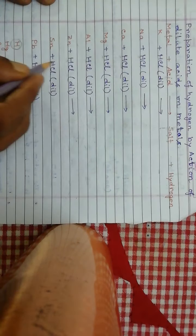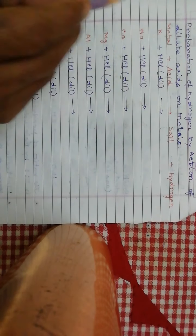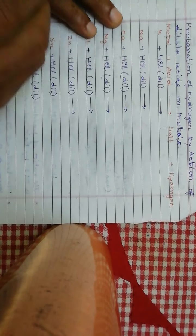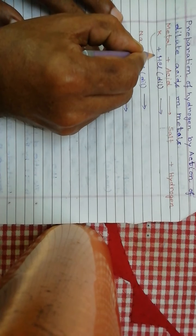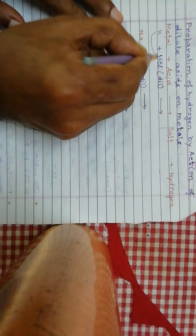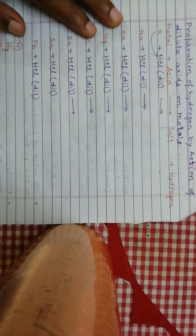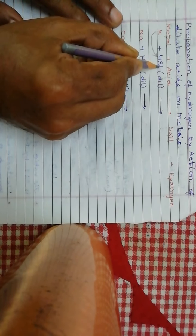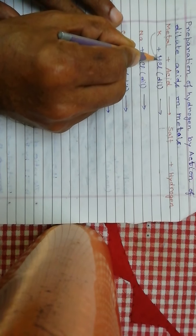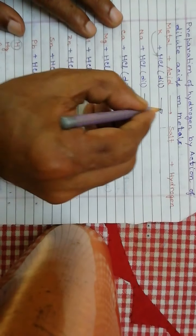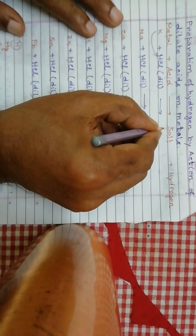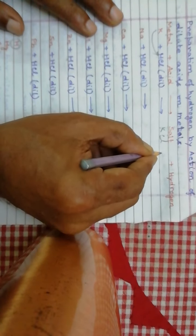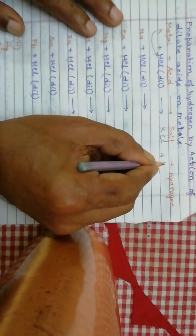Here we take hydrochloric acid. When potassium reacts with hydrochloric acid, potassium displaces hydrogen. And since potassium takes the place of hydrogen, it will form potassium chloride. The formula of potassium chloride is KCl plus hydrogen gas, H₂.